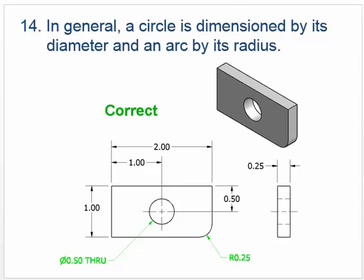In general, a circle is dimensioned by its diameter and an arc by its radius. Here they're dimensioning using the diameter symbol (Ø) pointing to the circle, and then using R for the radius on the arc.